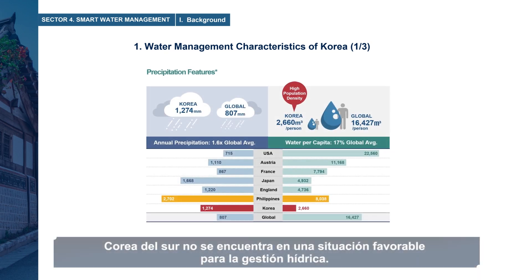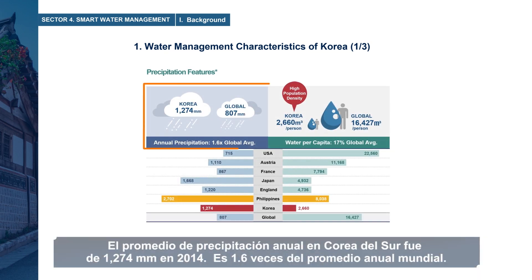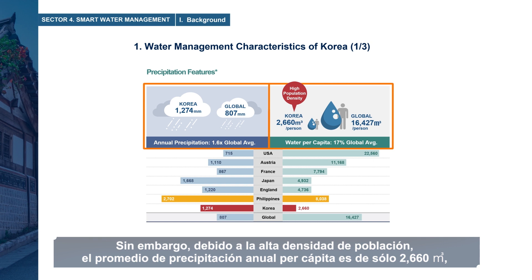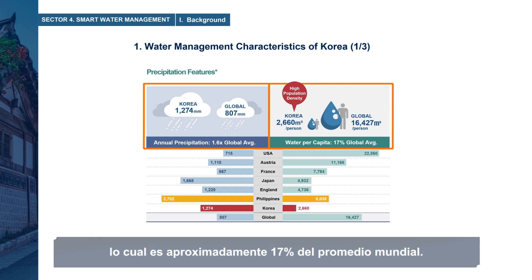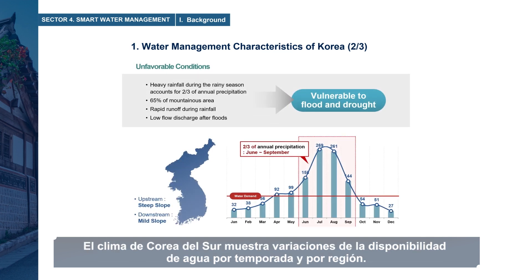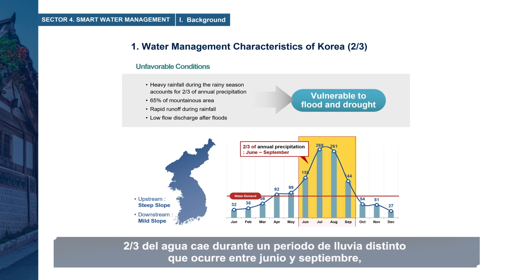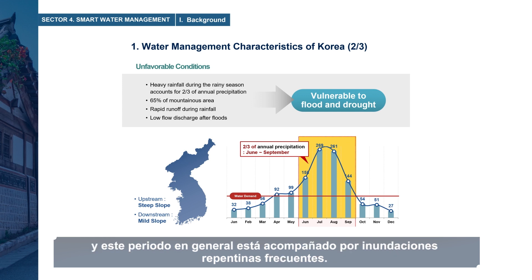South Korea is not in a favorable situation for water management. Average annual rainfall in South Korea is 1,274 millimeters as of 2014, which is 1.6 times the world annual average. However, due to high population density, the average annual rainfall per capita is only 2,660 cubic meters, approximately 17% of the world average. South Korea's climate shows both seasonal and regional variations in water availability, with two-thirds of rainfall falling during a distinct rainy period between June and September, often accompanied by frequent flash floods.